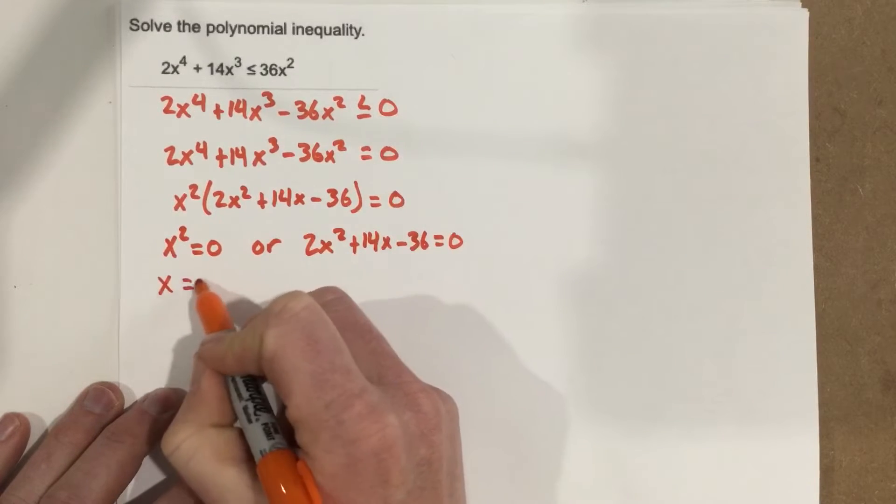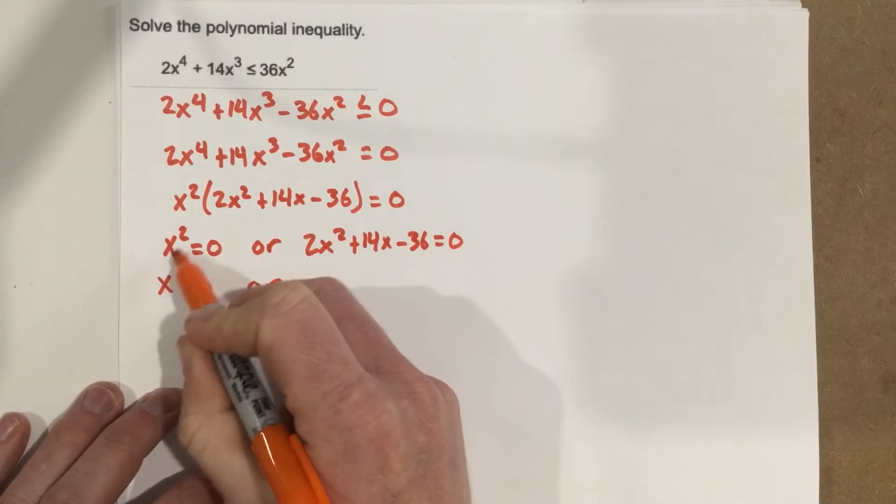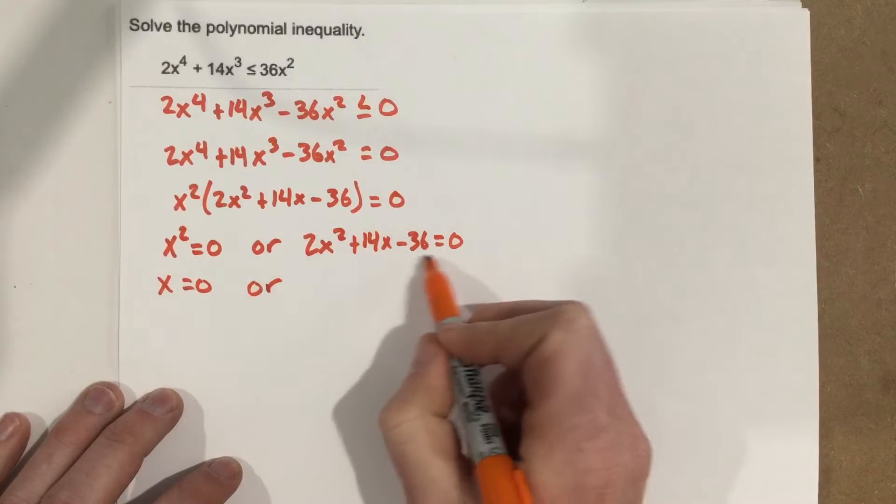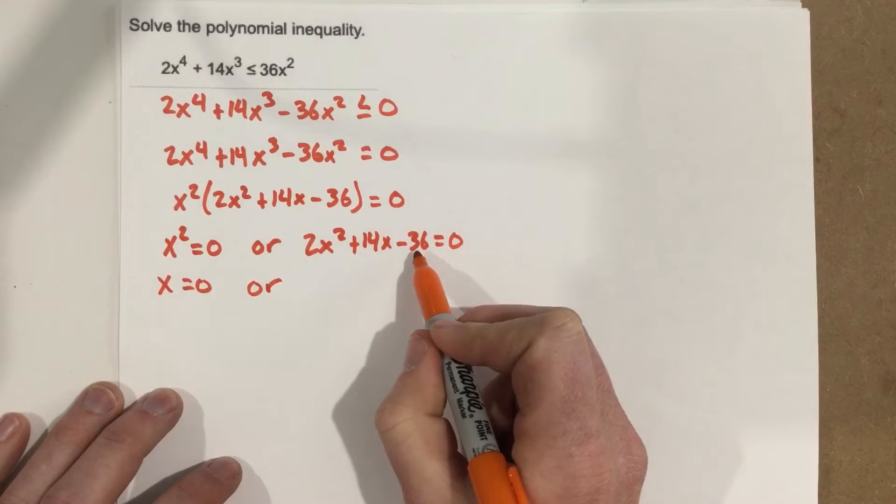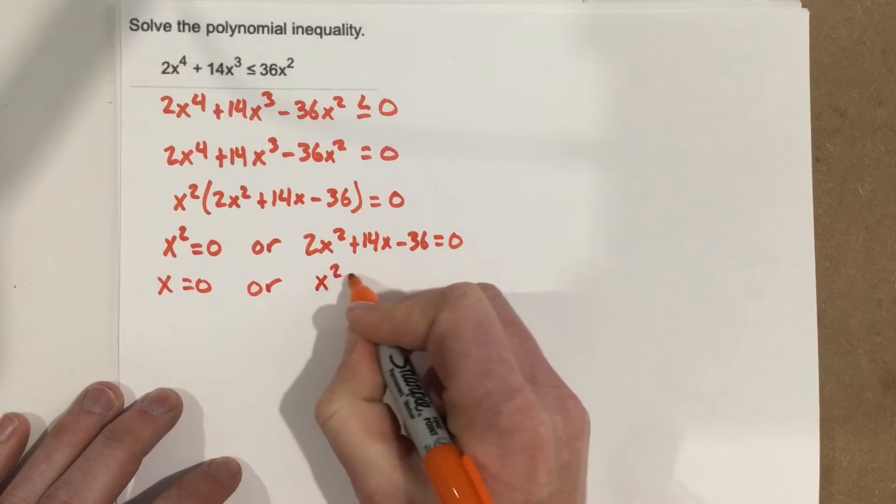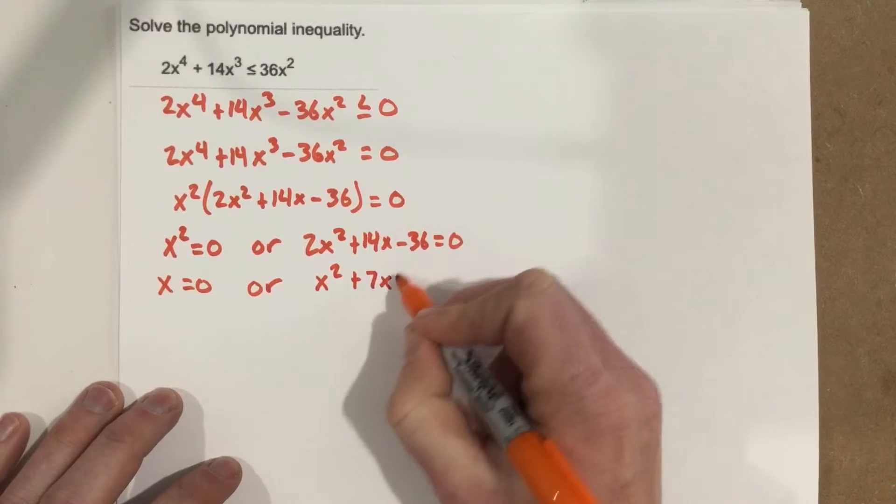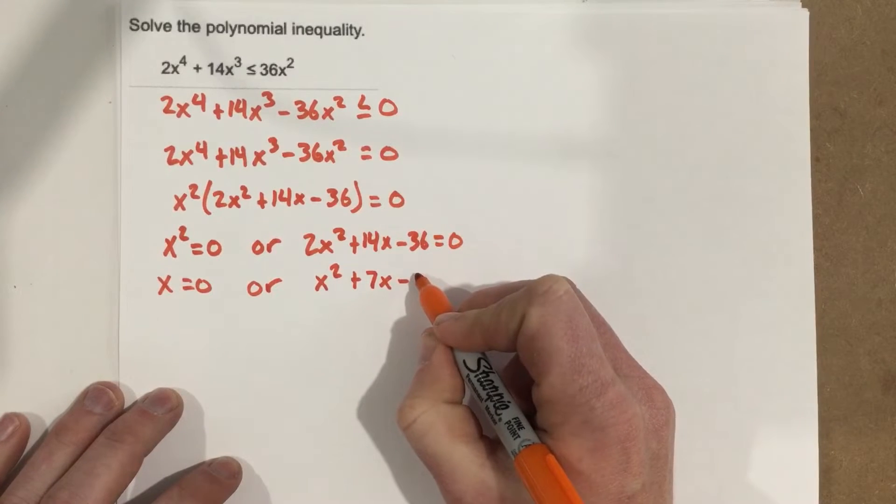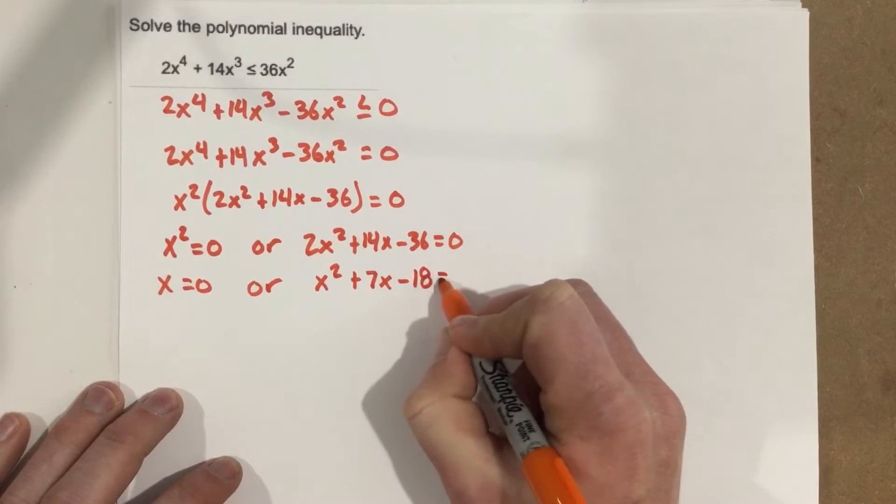Zero product property says that x squared equals zero or 2x squared plus 14x minus 36 equals zero. That means x equals zero. I'm going to essentially factor this or at least attempt to. I'm going to divide everything by 2 first and that will give me x squared plus 7x minus 18 equals zero.